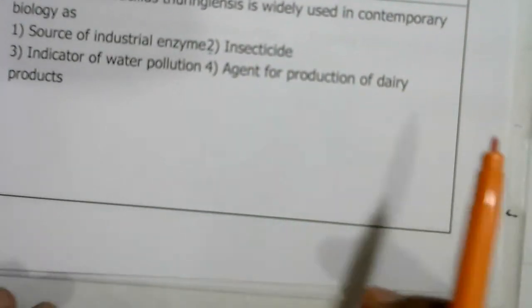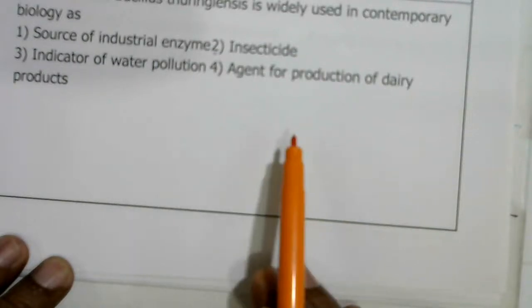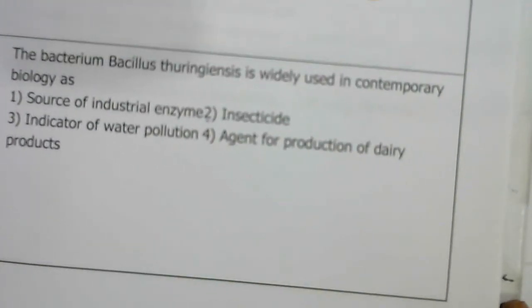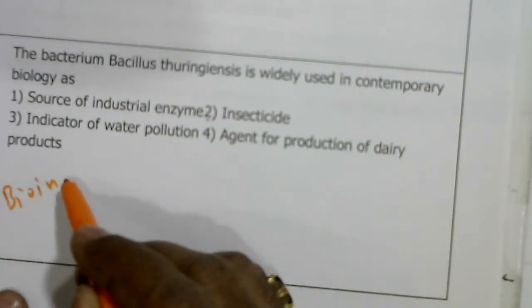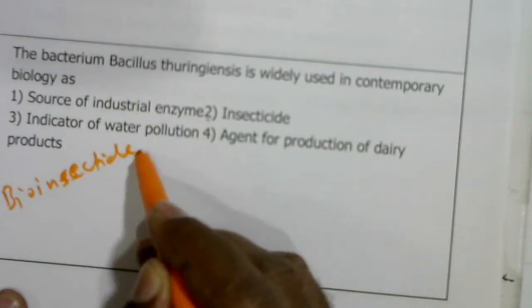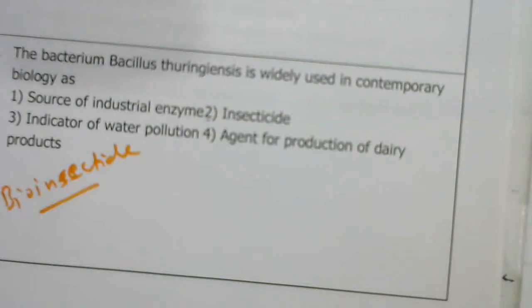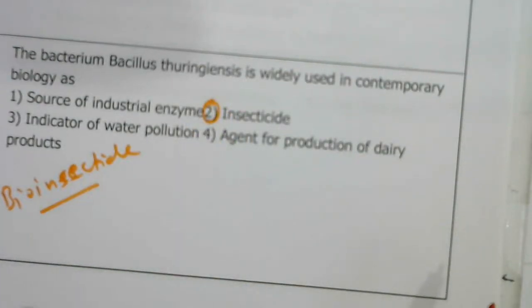Bacillus thuringiensis is widely used in contemporary biology because it is a natural bio-insecticide. To control insect pests we need not use chemical pesticides; we can use this natural bio-insecticide.